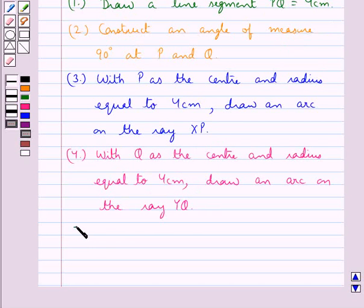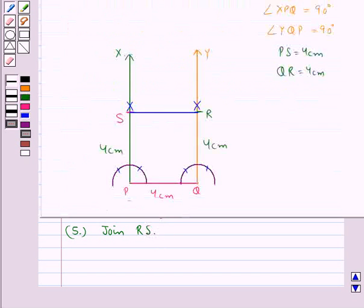Then, in the next step, we join RS where we get RS equal to 4 cm.